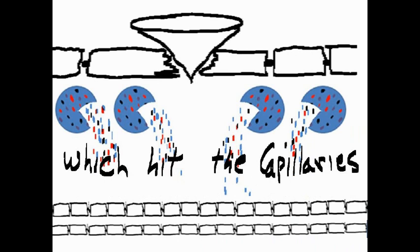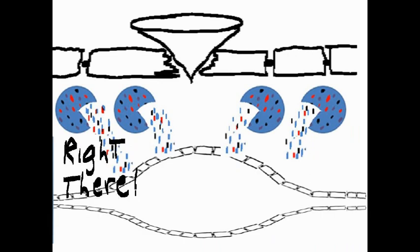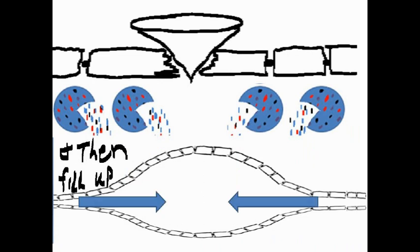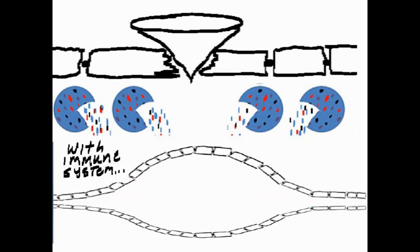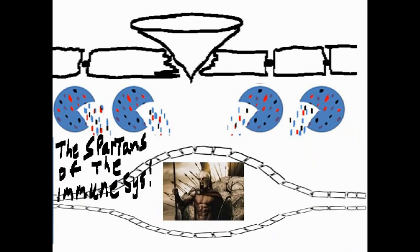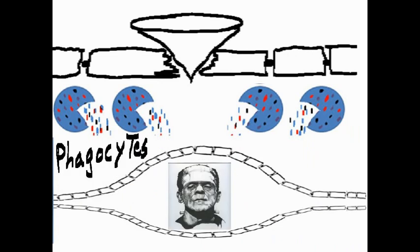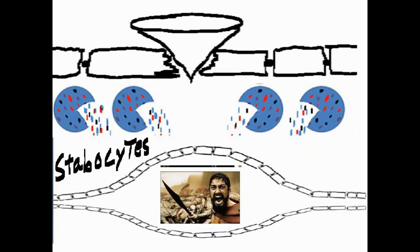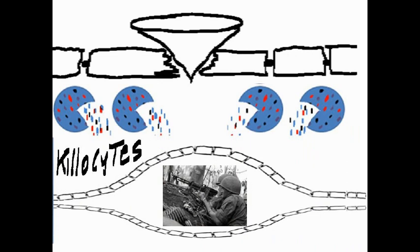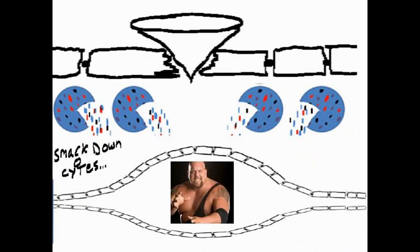The inflammatory agents hit the capillaries. They swell up right here, and fill up with immune system tough guys — the Spartans of the immune system: white blood cells, phagocytes, stabocytes, and smackdownocytes.